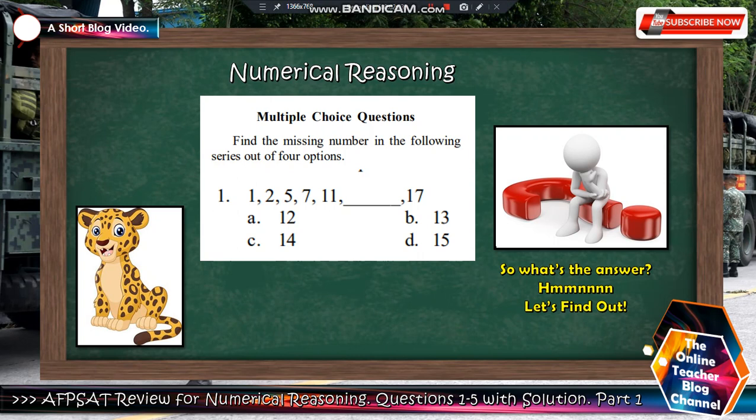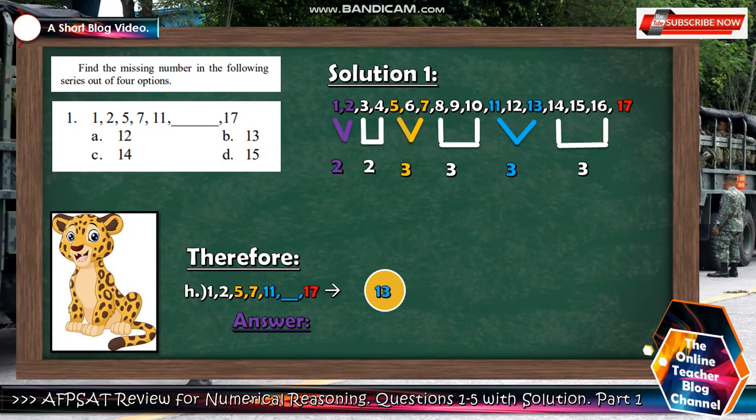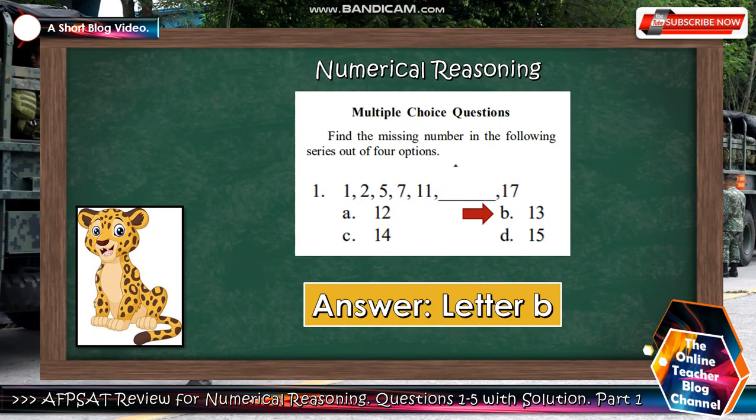So, what's the answer? Let's find out. I made a solution here for you to be able to understand how to solve this. As you can see here, 1 to 17. The intervals are: 1 to 2 is 2, 3 to 4 is 2, 5, 6, 7 is 3, 8, 9, 10 is 3, 11, 12, 13 is 3, 14, 15, 16 is 3, and 17. Obviously, the answer for this number 1 is 13. The answer is letter B, 13.